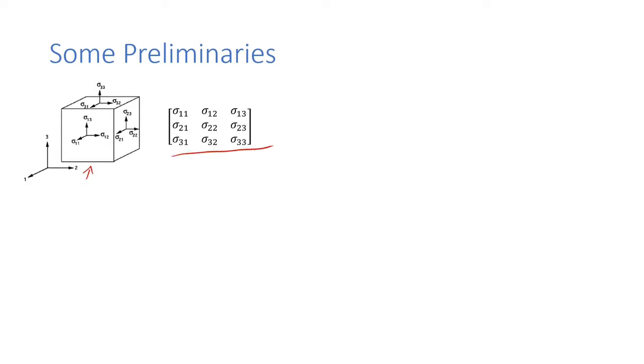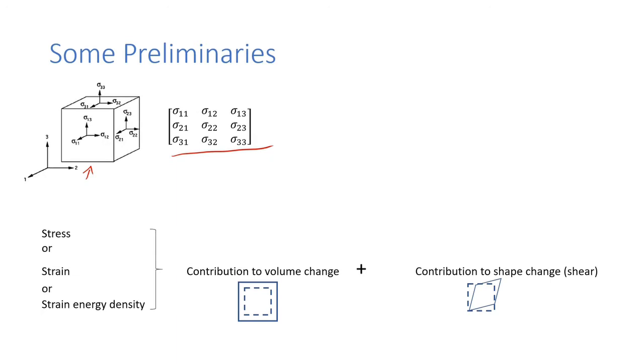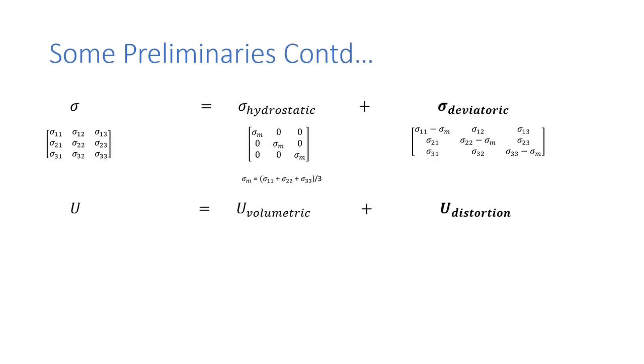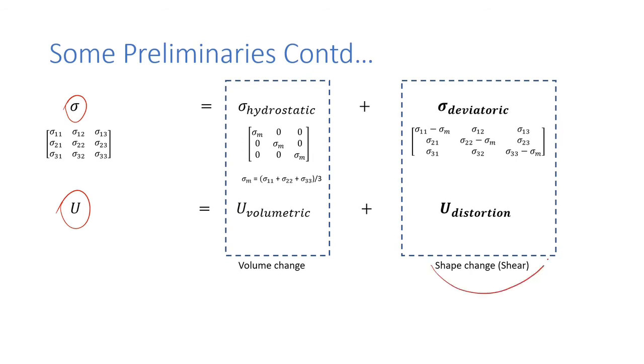Any quantity, stress, strain, or strain energy density could be decomposed into two parts based on their contribution to volume change and shape change which is also shear. Stress is decomposed into hydrostatic and deviatoric components whereas strain energy density is decomposed as volumetric and distortion energy components. The shape change quantities will be of interest to us.